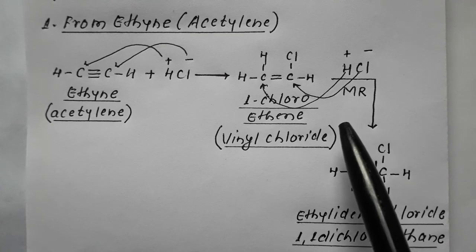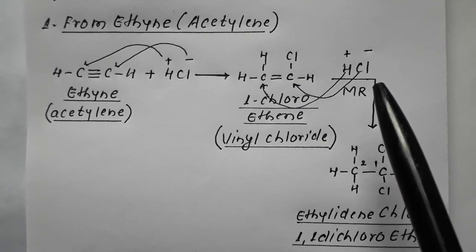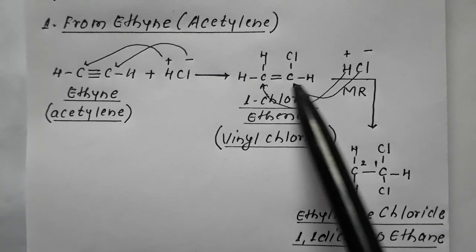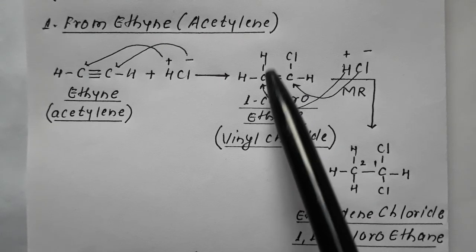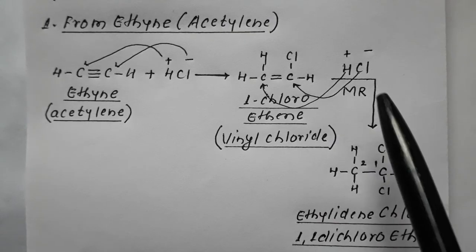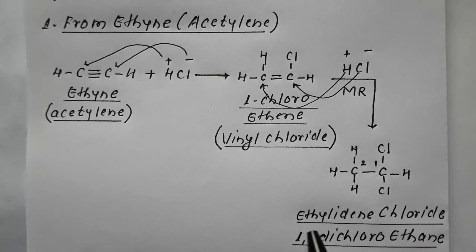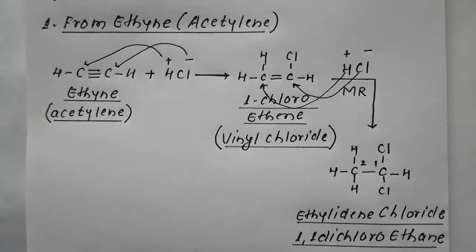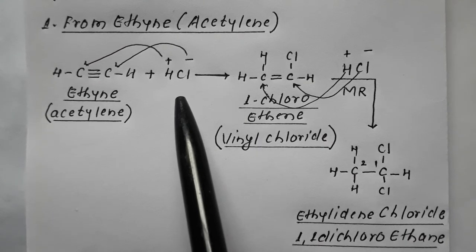When HCl is taken in excess, one more molecule of HCl adds following Markovnikov's rule — the negative part (Cl) combines to the carbon containing the least number of hydrogens. This carbon has only one hydrogen while the other has two, so the next Cl also comes onto the same carbon, resulting in formation of ethylidene chloride — that is 1,1-dichloroethane.